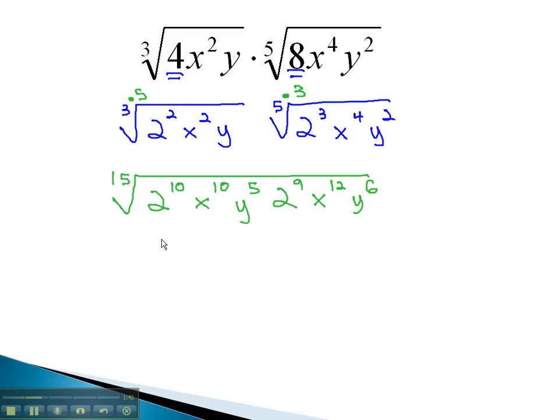We can now combine these together under a 15th root. We can still use our exponent properties on the 2's, just like before, by keeping the base the same and adding the exponents of 10 and 9, telling us we have 19 2's under this radical. Similarly, we can add the exponents on the x's. 10 plus 12 is 22. We can also add the exponents on the y's. 5 plus 6 is 11.